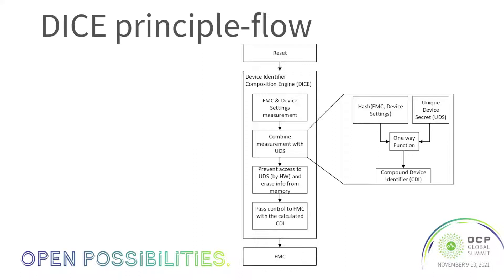From this CDI, the attestation flow will be based on derived keys. In order to prevent access to UDS — the device unique secret — by hardware and firmware from later firmware code stages, the UDS is hidden following the calculation of CDI and cannot be accessed until the next device-level reset.